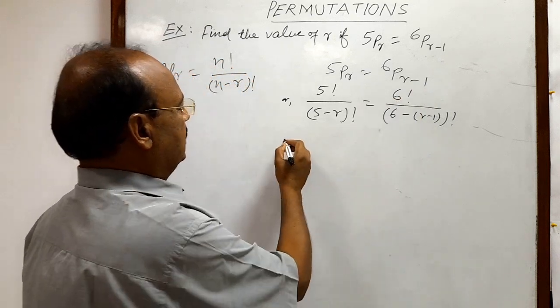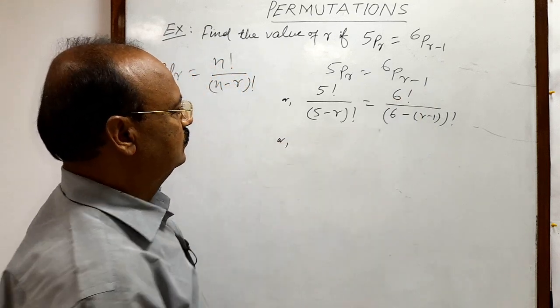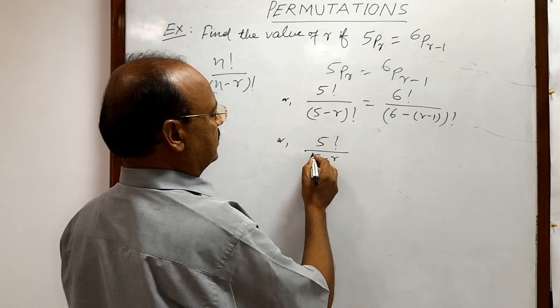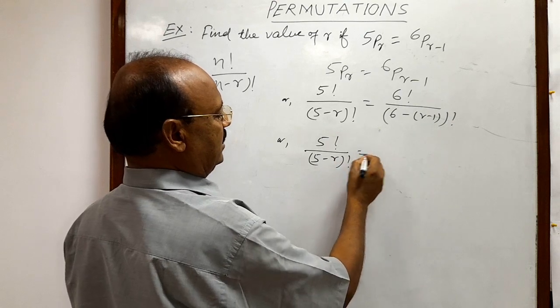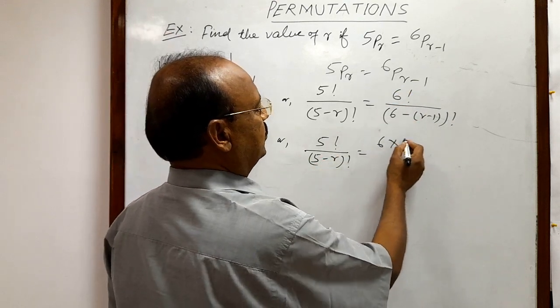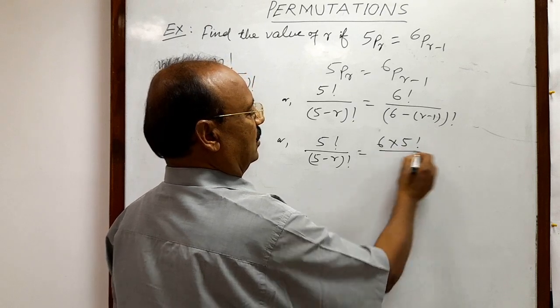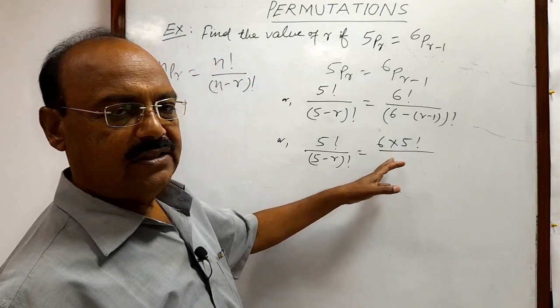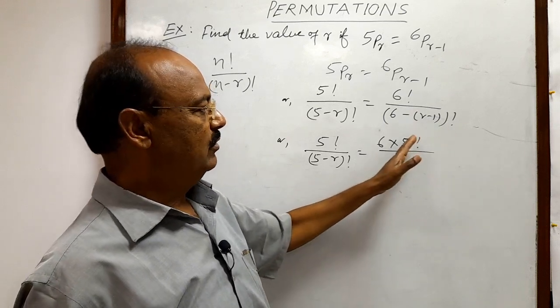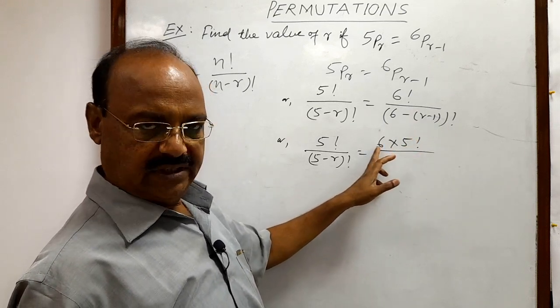Now we will simplify it further. This is 5 factorial by (5 minus r) factorial is equal to—this 6 factorial can be written as 6 into 5 factorial. How we can write like this? Because in 5 factorial we are having all multiplications 1, 2, 3, 4, 5 continued up to 6 here.